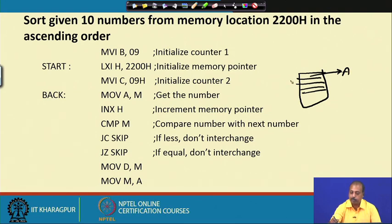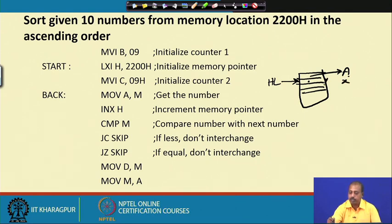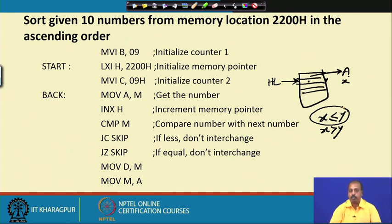Then we execute CMP M, which compares the content of this memory location with the accumulator. If x (accumulator) is less than or equal to y (memory), they are already in proper order and we do nothing. If x is greater than y, we need to swap them. Jump on carry and jump on zero handle the two cases where we do not interchange; otherwise we proceed to interchange.